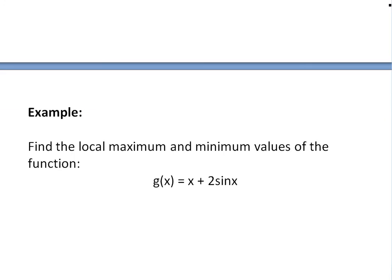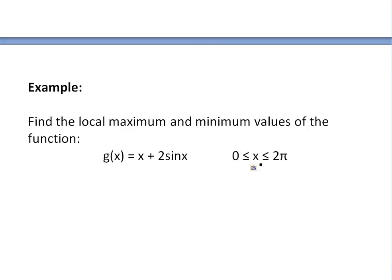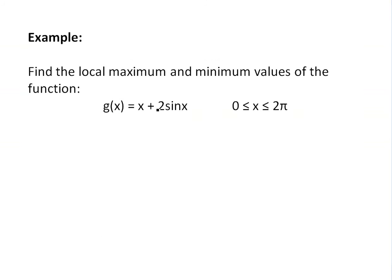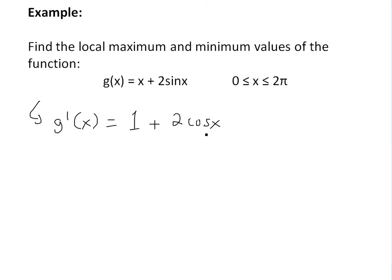So now this is the example I'm going to go over. It basically states: find the local maximum and minimum values of the function g of x equals x plus two sine x, for the domain where x is greater than zero and less than two pi. The first thing to do here is to find the critical numbers, and then we would have to see if the derivative is positive or negative to the left and right of the critical numbers. We'll take the derivative: g prime of x is equal to one plus two cos x. You can see a proof of this in the video link below on trigonometry derivatives.